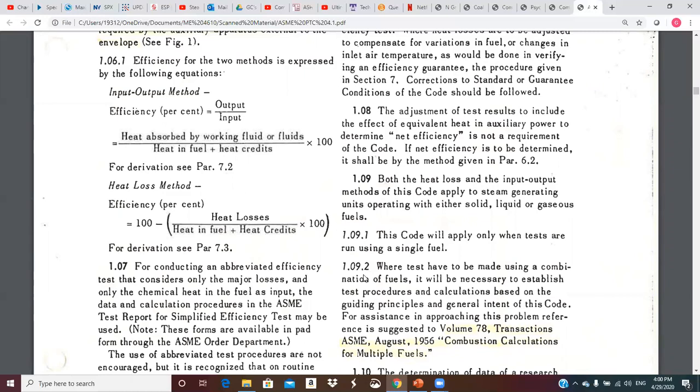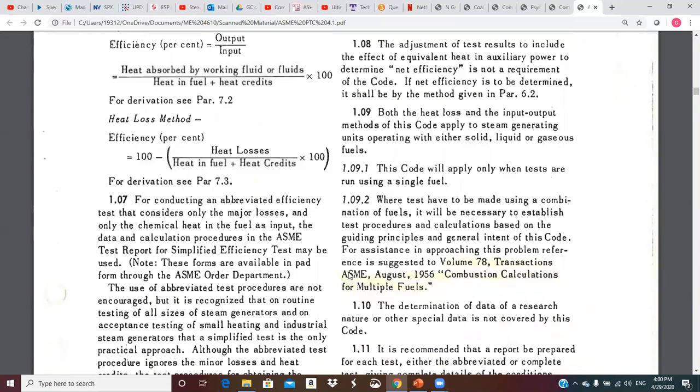And then the second way is the loss method. And that is 100% minus heat losses. And there's, I think there's, I don't know, 15, 16, 17 different losses possible. Not that a boiler will have all of them, but a big boiler might have eight or 10 of them. And that's the magnitude of that loss divided by the heat in the fuel plus the credits. In other words, the input.